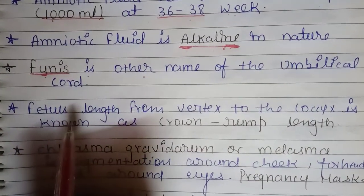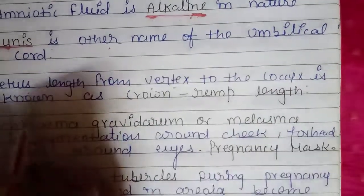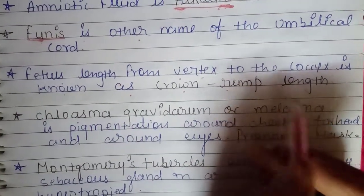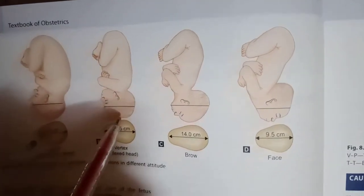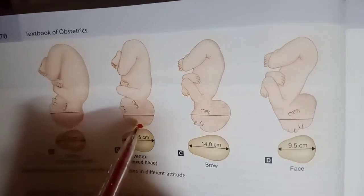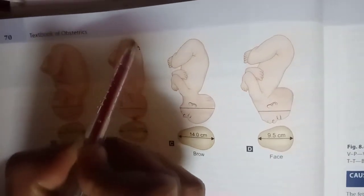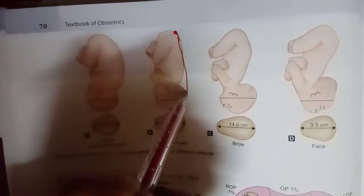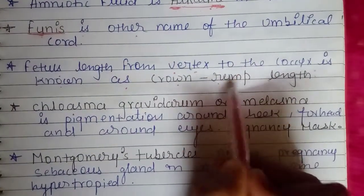Fetus length from vertex to the coccyx is known as crown rump length. The vertex means the highest point of the anterior fontanel. So, the measurement from the highest point (vertex) of the baby down to the coccyx — which is below the sacrum — is what we call crown rump length.